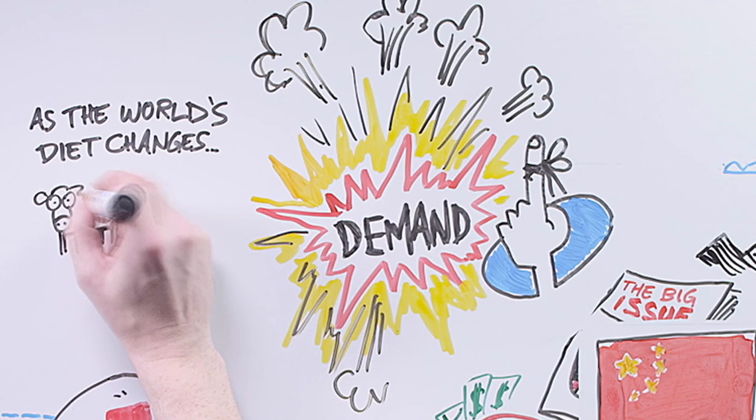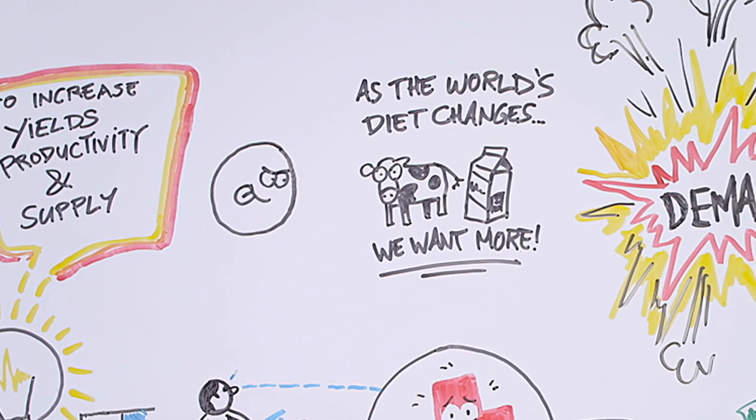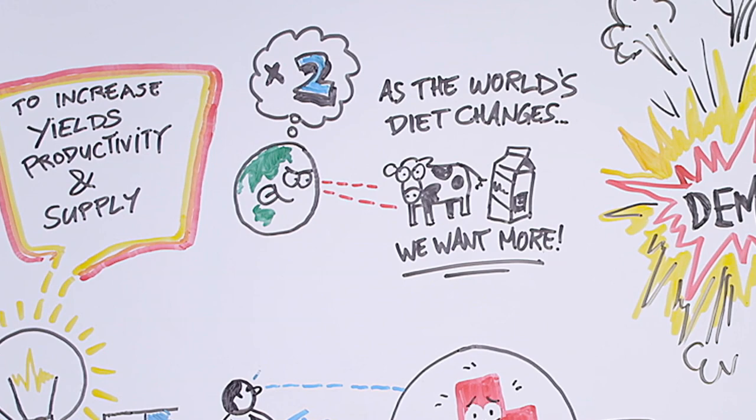As the world's diet changes, we want to consume more and more meat and dairy. But moving from rice to meat is an enormous production challenge. The UN estimates that the global demand for meat will double over the next 20 years. Now this presents an enormous energy challenge.